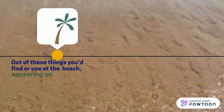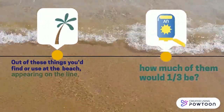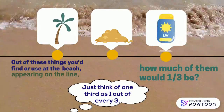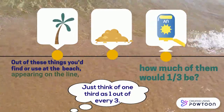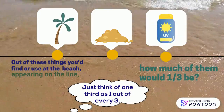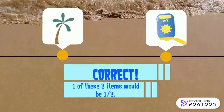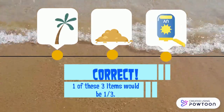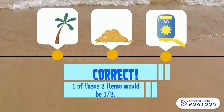Out of these things you'd find or use at the beach appearing on the line, how much of them would one third be? Just think of one third as one out of every three. Correct! One of these three items would be one third.